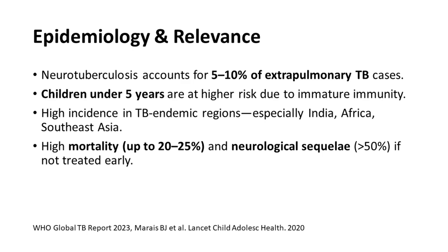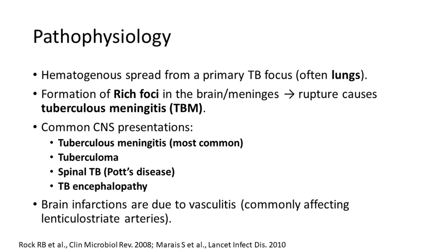Looking at the pathophysiology, CNS TB is due to hematogenous spread from the lungs. Usually there is a Rich focus in the brain, and when that focus ruptures it causes TBM. Other CNS presentations include tuberculomas, especially with paradoxical reactions. There may be associated spinal TB — Pott's disease — and TB encephalopathy. There is also vasculitis in patients with neuro TBM due to affection of the lenticulostriate arteries, and aspirin may be required in such patients.